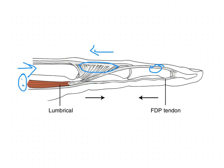The distal movement of the FDP tendon releases much of the flexor force of the profundus at the MCP joint as well as the IP joints. If this passive flexor force is released, the lumbricals exert an active IP extensor force. The release of the flexor digitorum profundus tendon helps in the extension of the IP joints — normally the passive force obstructs extension.